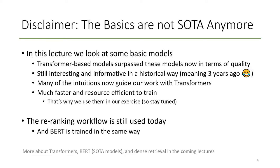We mainly use this content-based ad hoc retrieval without other features because the open test collections available don't provide us with more features. A second disclaimer: the basics we look at today are not state of the art anymore. Transformer-based models surpassed these initially proposed simple models in terms of quality. However, we believe it's still interesting and informative to look at them. Many of the intuitions now guide our work with transformers, and the basic models are much faster and resource-efficient to train. More about transformer re-ranking, BERT models, and dense retrieval is coming in the next lectures.